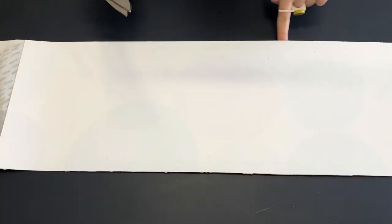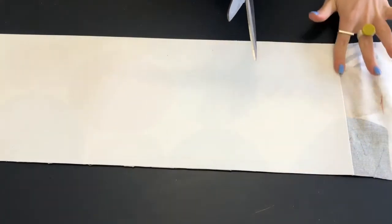So you can see now that I have cut both of these long sides. Now I'm going to choose one of my short sides and I'm going to cut that flush as well.